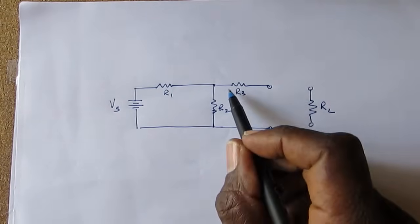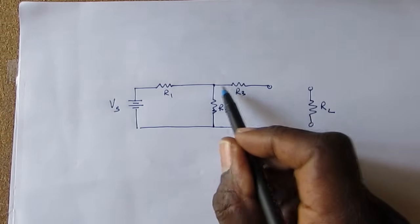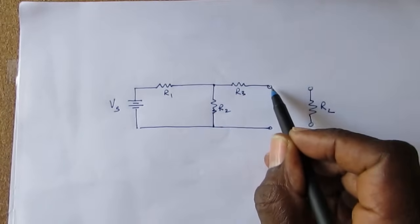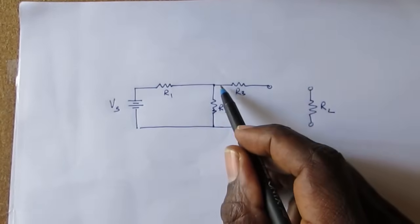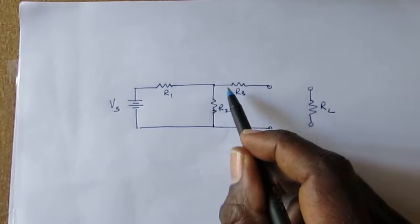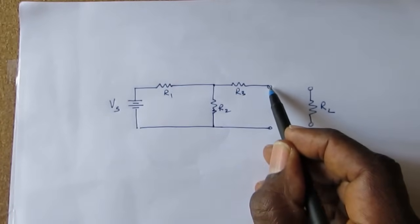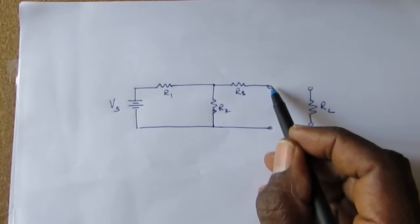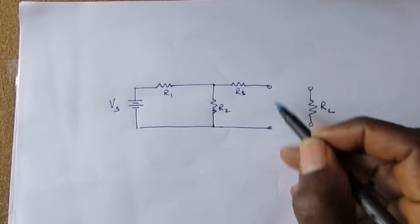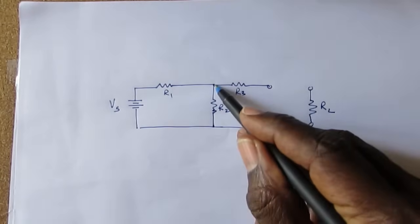Note that with the load removed, this point is an open circuit, so no current flows into this resistor. Therefore, there is no voltage drop across this resistor. Hence, the voltage here across these two points would be the same as the voltage across this point and that point.